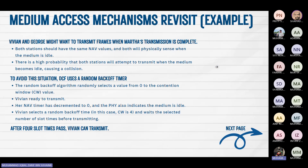Vivian and Josh might want to transmit a frame when Marta's transmission is complete. Both stations will have the same NAV values and both will physically sense when the medium is idle, creating a high probability of collision. To avoid this, DCF uses a random backoff timer — the random backoff algorithm randomly selects a value from zero to the contention window (CW) value.